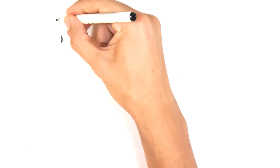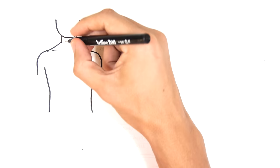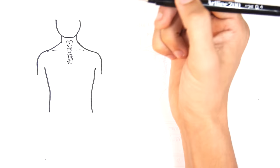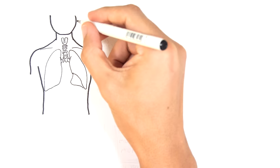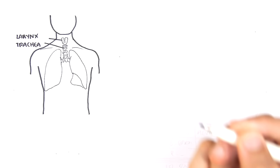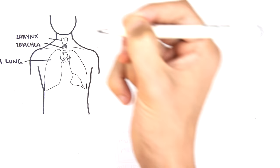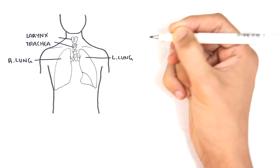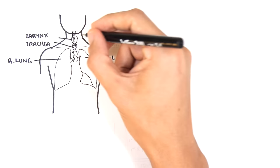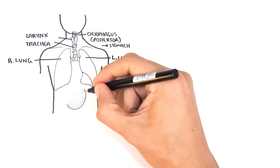Hello, in this video we're going to talk about the lung pleura. This is a clinical anatomy video. Let's begin by reviewing the respiratory tract briefly, starting from the larynx, going down to the trachea, which bifurcates into the primary bronchi, entering the right lung and the left lung. Behind the respiratory tract is the esophagus, which leads to the stomach below the diaphragm.